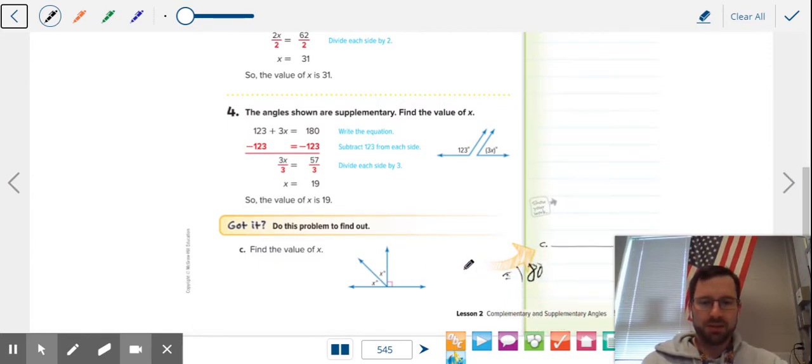We know that two of the angles are X, so X plus X is 2X. And the third angle is a square, which means it's a right angle or 90.